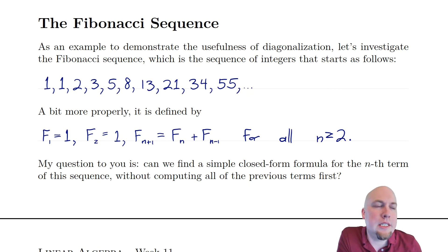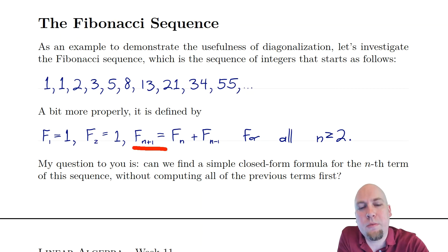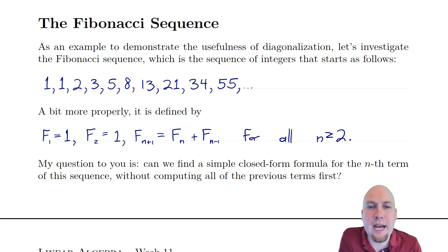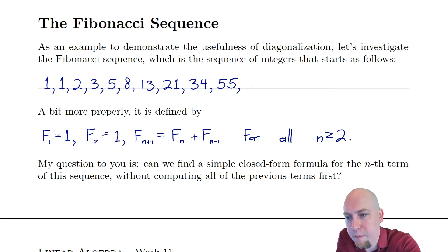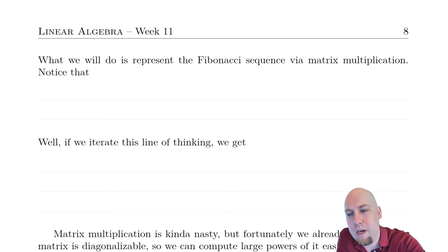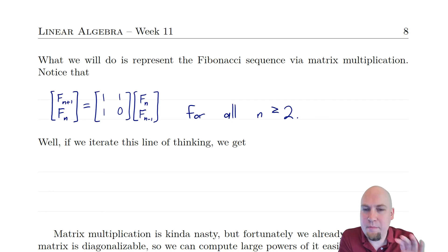How can we turn this into a linear algebra problem? What we've got to do is encode this recurrence relation in a matrix. This is called a recurrence relation where one value of a sequence depends on previous values. We've got to encode that in a matrix somehow. Notice that you can represent this recurrence relation via matrix multiplication.